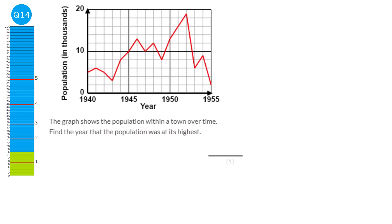We need to find where the graph is at its highest. Going down from that highest point, the years seem to go up in ones — 1950, 1951, 1952. So the answer is 1952.